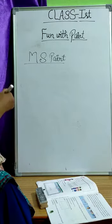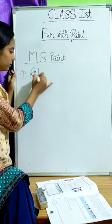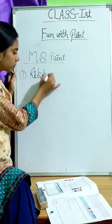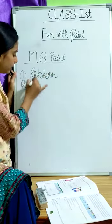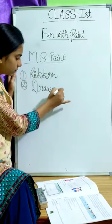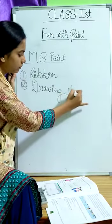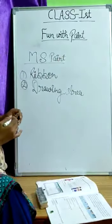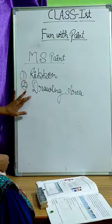First, ribbon. Second, drawing area. These are the parts of the window.